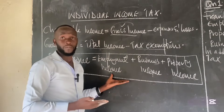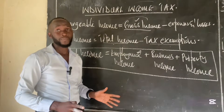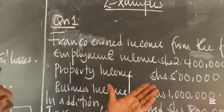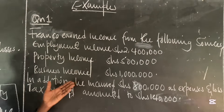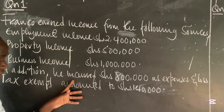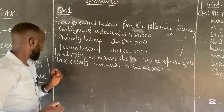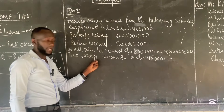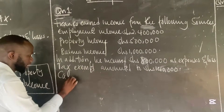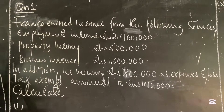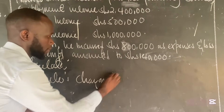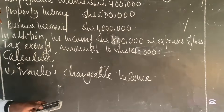With this summary, we can now have examples. When you have the definitions at your fingertips, the examples become very simple. Branko earned income from the following sources: employment income $2,400,000; property income $500,000; business income $1,000,000. In addition, he incurred $800,000 as expenses and losses. He also had tax exemptions amounting to $140,000. The question asks you to calculate Branko's chargeable income.